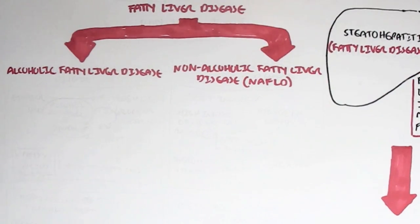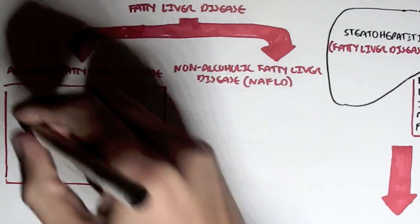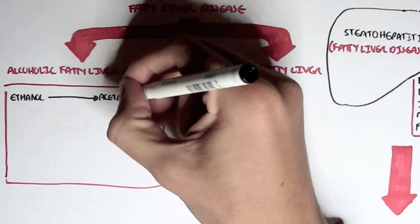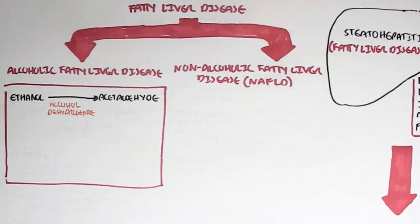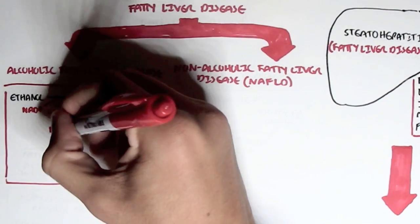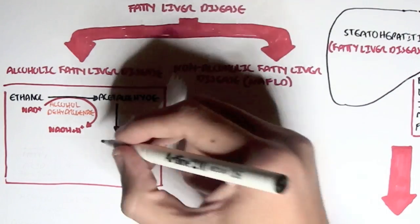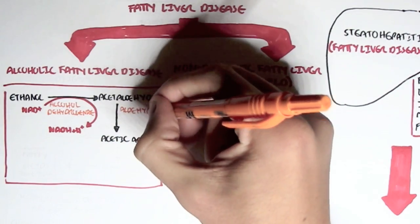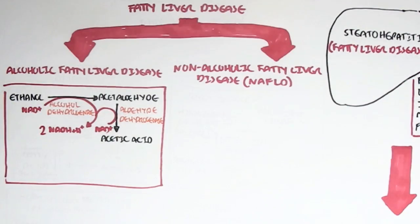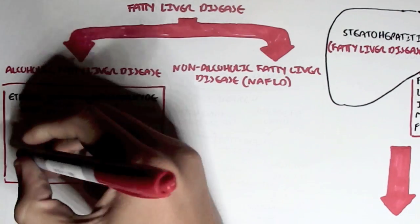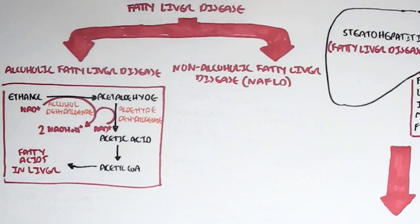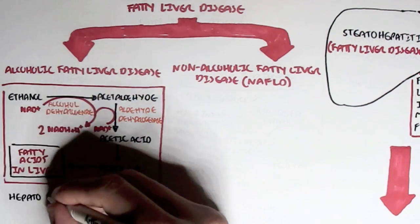Alcoholic fatty liver disease is caused by alcohol consumption. When we have too much ethanol, it can be converted to acetaldehyde by the enzyme alcohol dehydrogenase — NAD is reduced to NADH. Acetaldehyde can then convert to acetic acid by the enzyme aldehyde dehydrogenase — NAD is also reduced to NADH here. So now we have two NADHs. Acetic acid can then convert to acetyl-CoA, which is the main precursor to fatty acids, and so we have a lot of fatty acids synthesized within the liver.